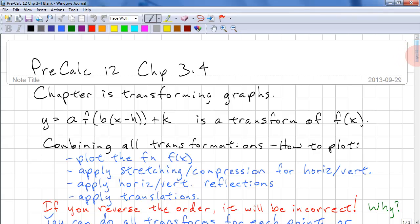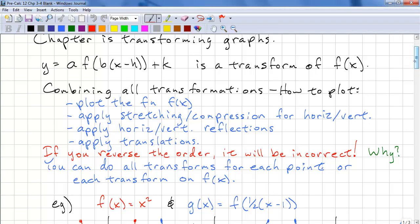So how do we plot this? We plot the original function. We apply stretching and compression for the horizontal and vertical, then we apply any horizontal and vertical reflections. And finally we apply the translations. It is important to do this in the correct order.